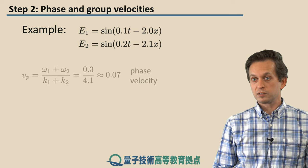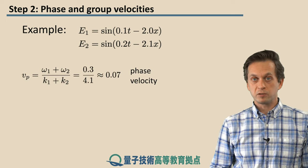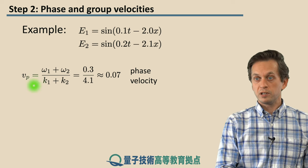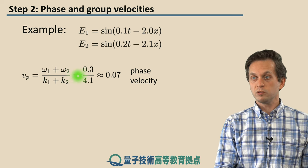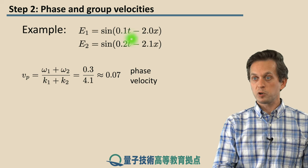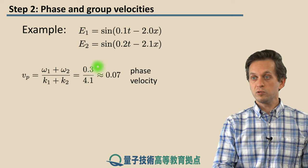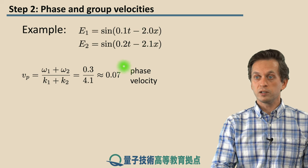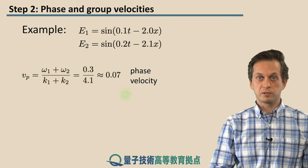So now, let's actually compute what the phase and group velocities are for our example. We just substitute into our expressions for phase velocity. So, ω1 plus ω2, we just add them together. So, 0.1 plus 0.2 is 0.3. K1 plus K2, again, we add them together. 2.0 plus 2.1 is 4.1. And this is approximately 0.07.